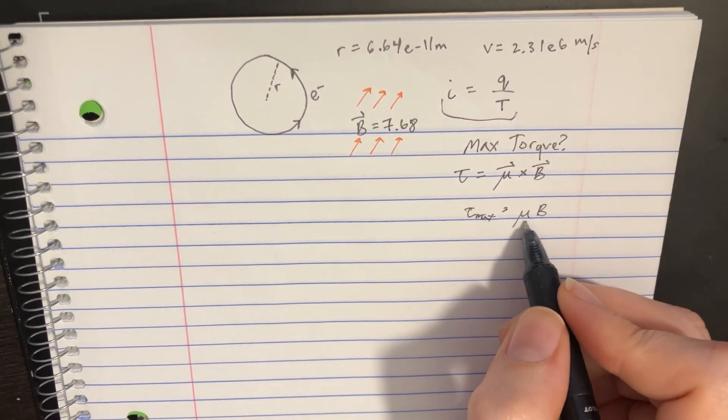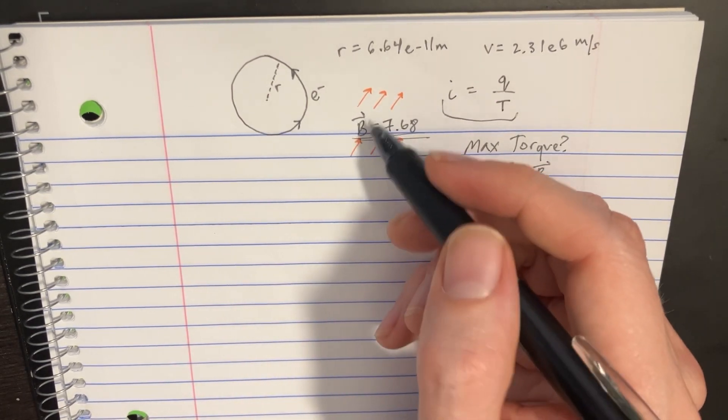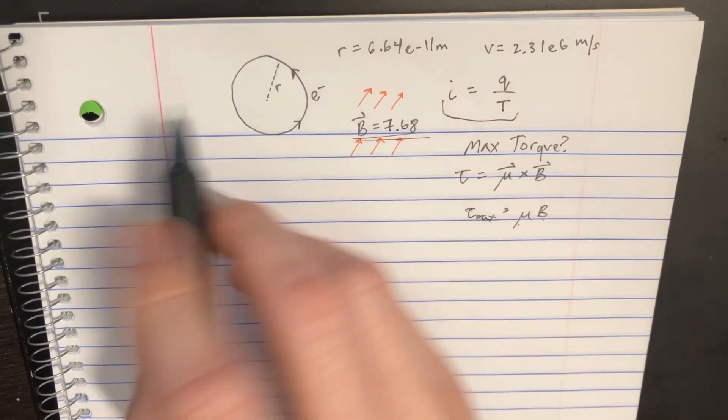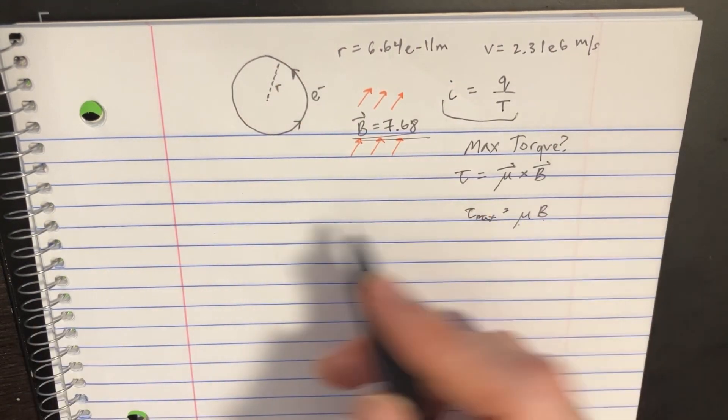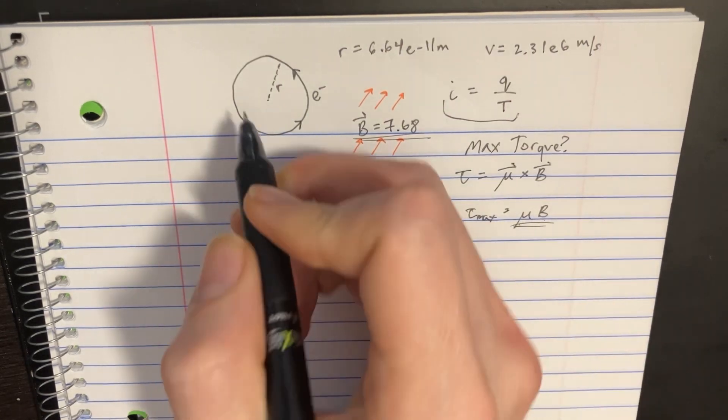Now we need to figure out what mu is, because we already know B - that's given to us. What is mu?